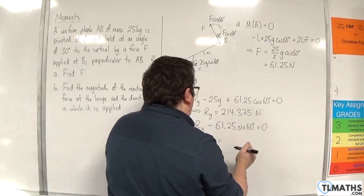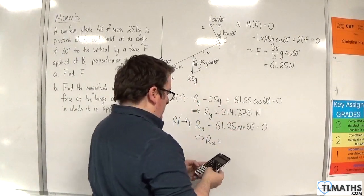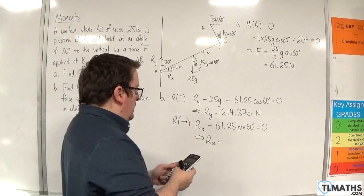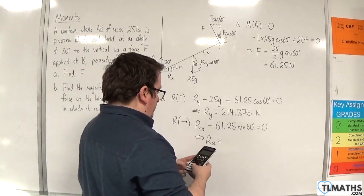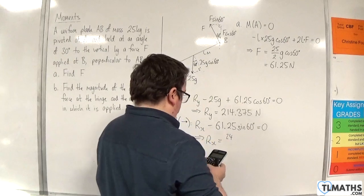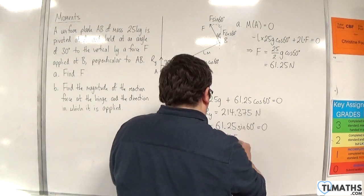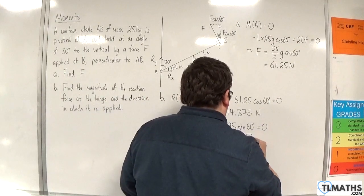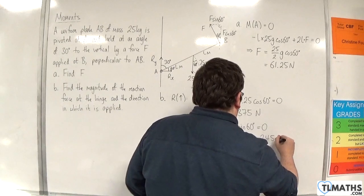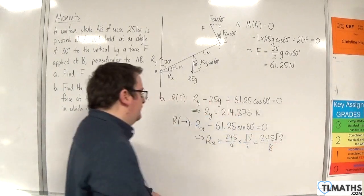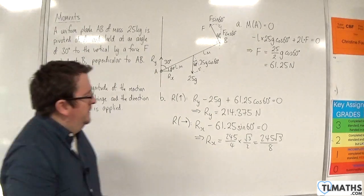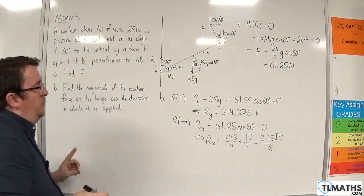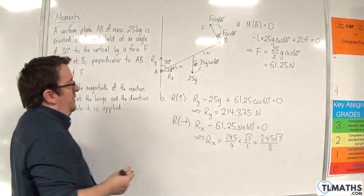Sine of 60 is root 3 over 2. I'm just trying to make this easier for myself to write in. So 61.25 is 245 over 4. So 245 over 4 times sine of 60, which is root 3 over 2, let's write that as 245 root 3 over 8. That is the horizontal component of the normal reaction force at the pivot.